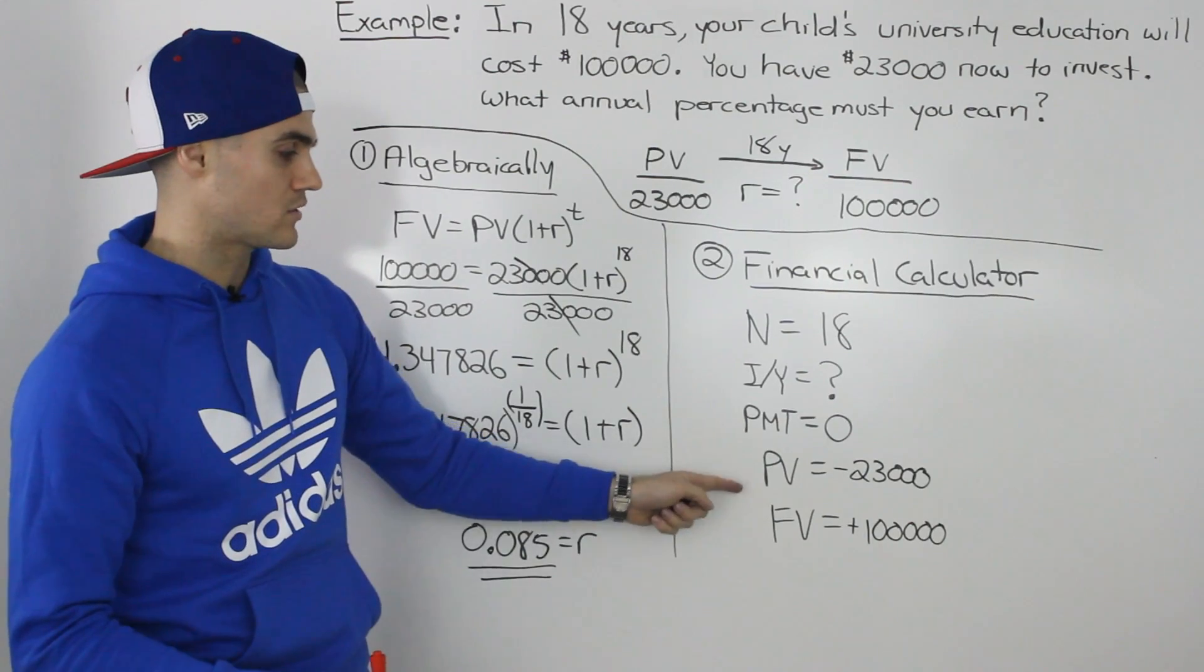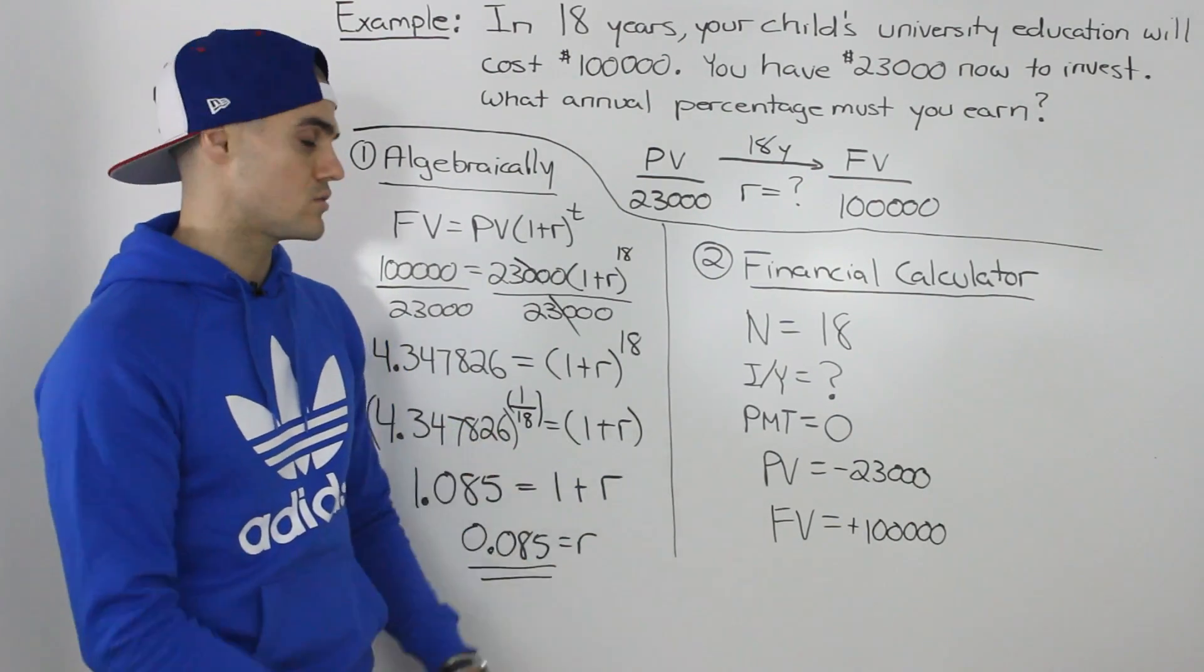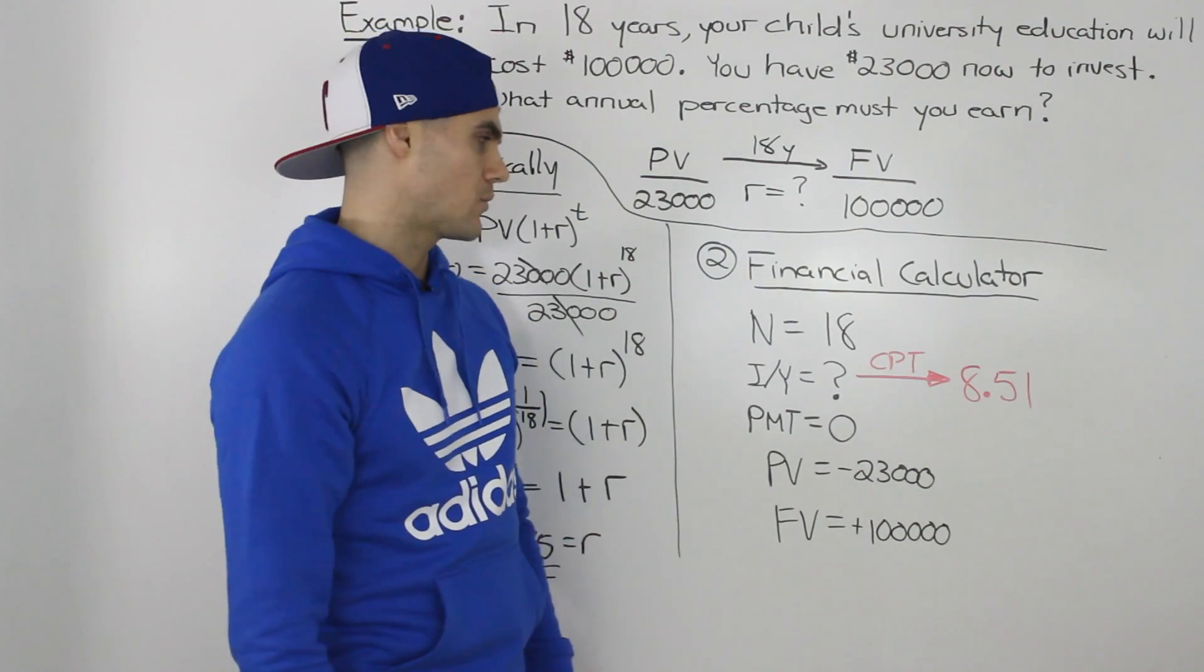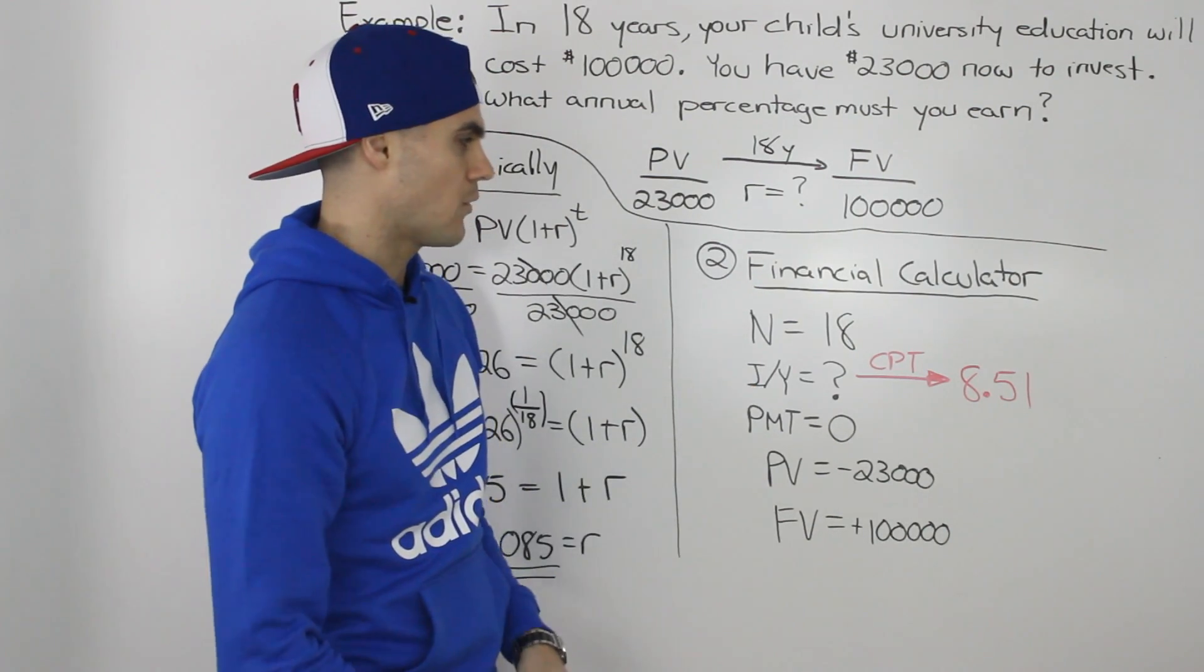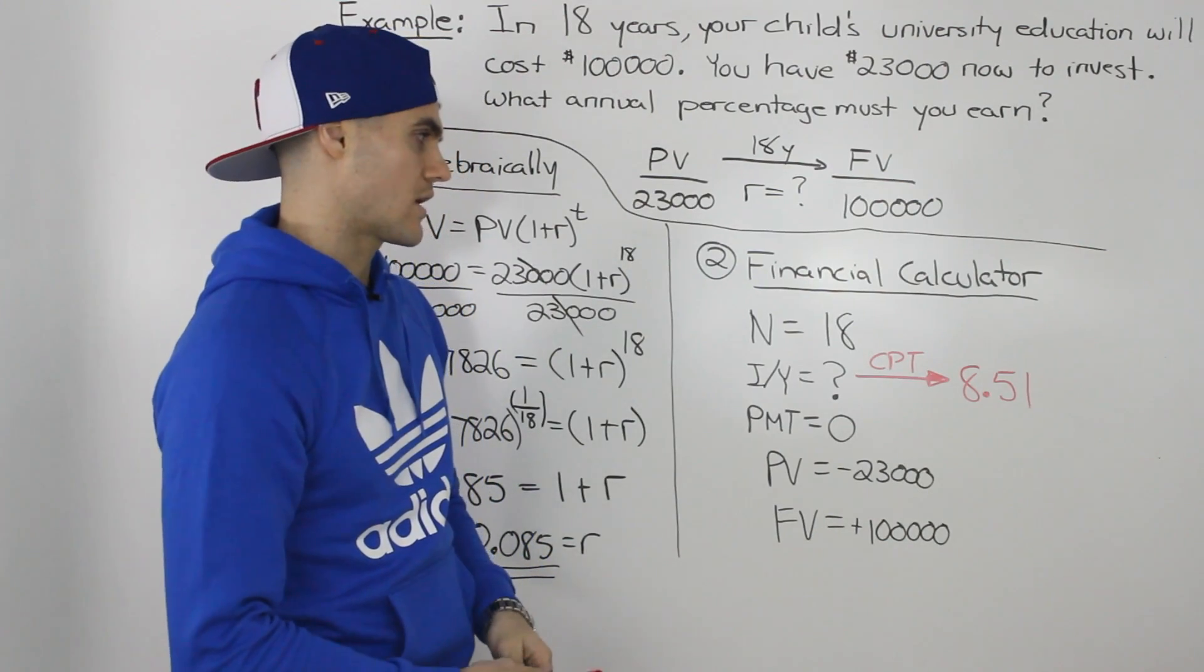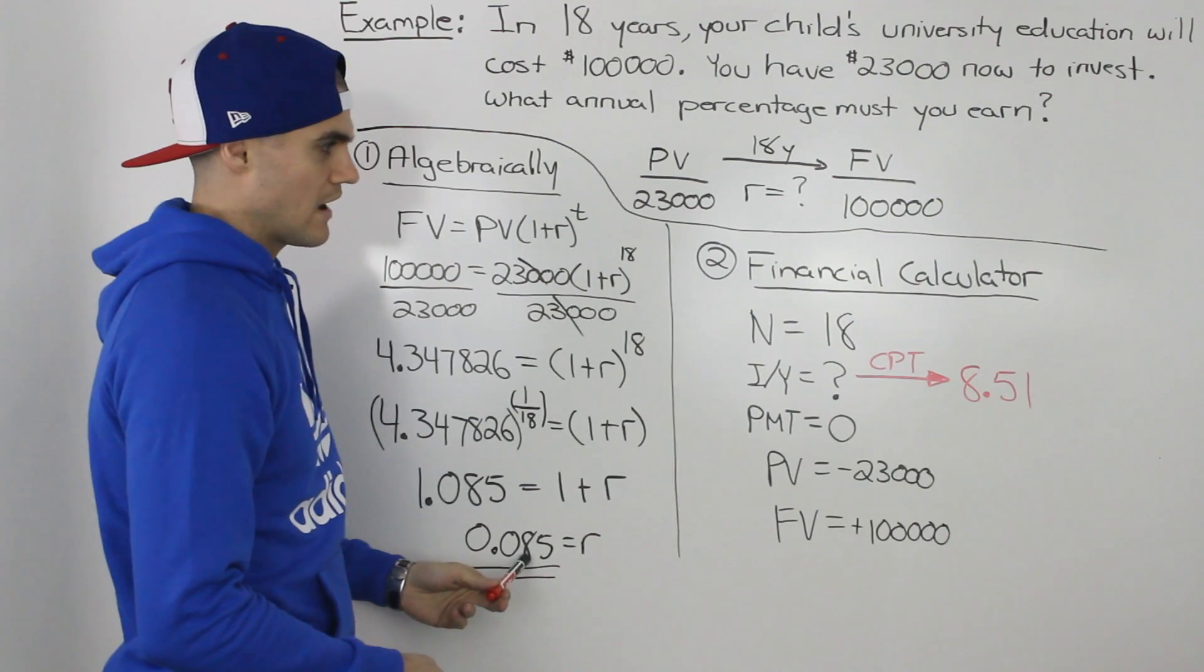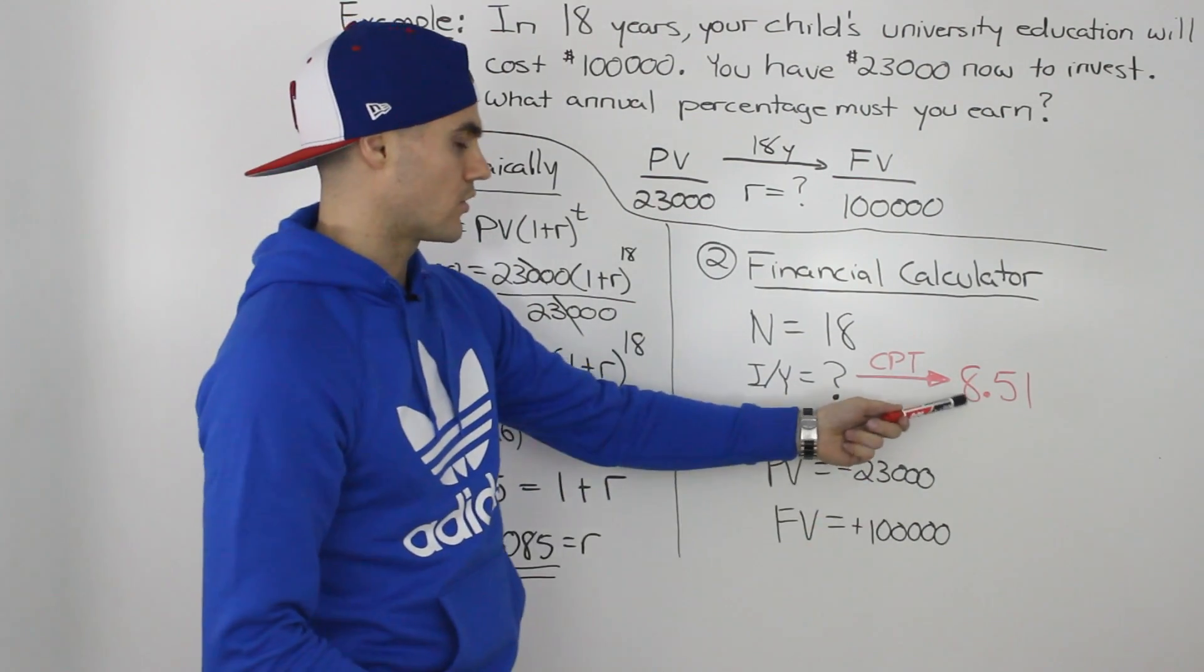When we input those variables in the financial calculator and solve for I/Y or compute it, we get 8.51%. That represents our percentage. Here we got 8.5%, and I actually rounded this, so this is probably more accurate.